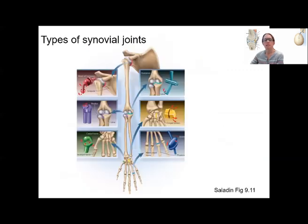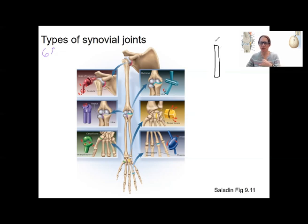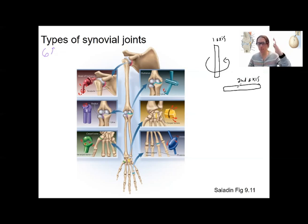Now for the types of synovial joints — there are six types, classified based on how they can move in terms of how many types of movements they allow. I'll talk about axes: something moves around an axis. If a joint can move around one axis, that's monoaxial or uniaxial. If it has a second axis in a different plane, it can move around that as well. We'll define joints based on how many axes they can move around.